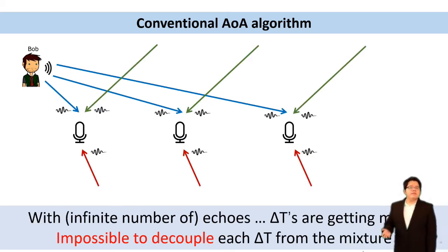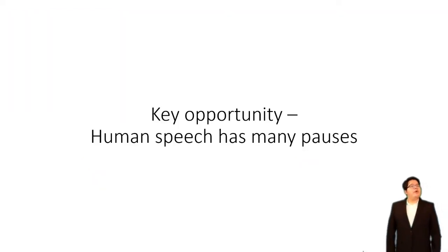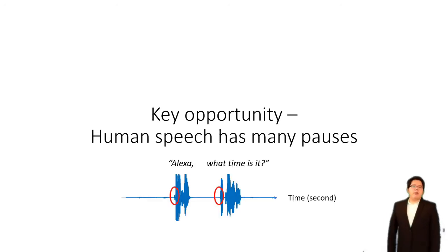But what if there are many passes from different directions? In this case, each pass will have different angle of arrival and has different delta t. These signal delays are getting mixed, and it's nearly impossible to decouple each delta t from the mixture. So we are introducing our key opportunity. Human speech has many pauses, so we can leverage the time of each pause. As shown in the red circle here, right after the pause, the signal is not polluted by previous echoes because previous window is silenced.